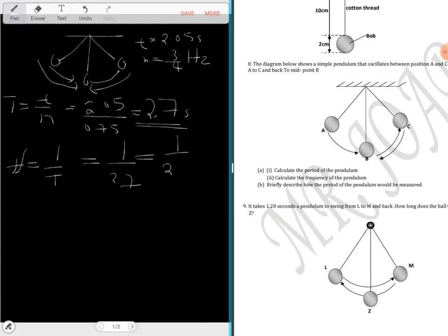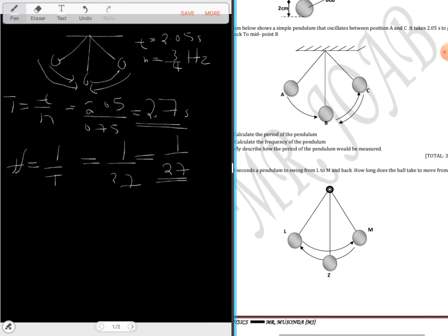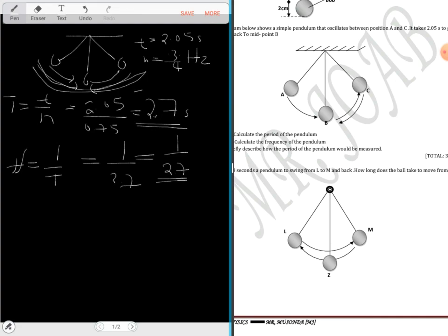This is 1 over 2.7. Briefly describe how the period of the pendulum would be measured. It's quite a good process but it's worth the marks. When measuring the period, you have to let it swing and as it is swinging, continue recording the time until you find the average time. Once you find time one, time two, time three, then find the average. Then period is equal to time over number of complete oscillations. The number of complete oscillations depends on how many you've done so far.